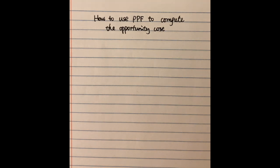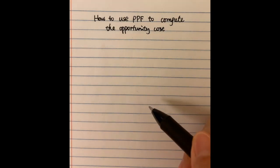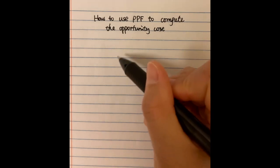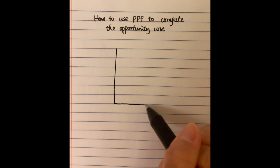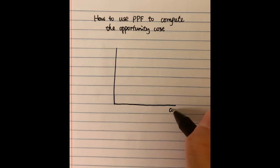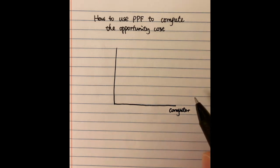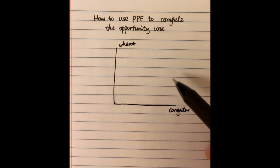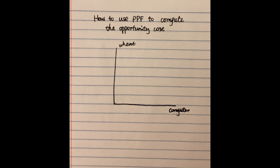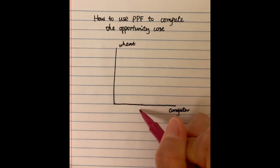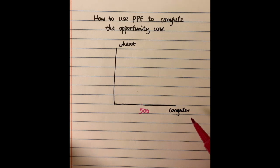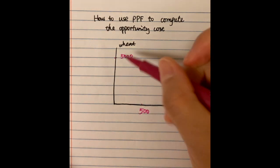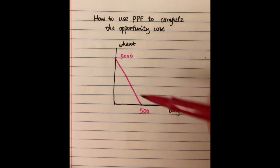So here, how to use the PPF to compute the opportunity cost. The examples in our textbook give you a PPF like this. We have the number of computers on the horizontal axis and the wheat quantity on the vertical axis. The maximum quantity of computers the economy can produce equals 500, and the maximum amount of wheat equals 5,000. Linking these two points gives us the PPF.